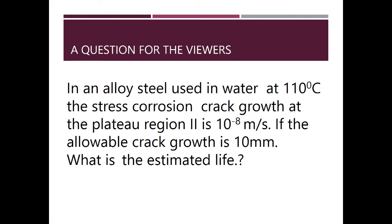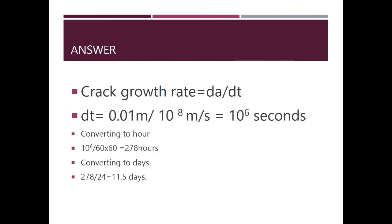A question for the viewers: In an alloy steel used in water at 110 degrees centigrade, the stress corrosion crack growth at the plateau region 2 is 10⁻⁸ meters per second. If the alloy crack size is 0.01 meters, then dA/dT gives: time = 0.01 m ÷ 10⁻⁸ m/s = 10⁶ seconds. Converting to hours: 10⁶ ÷ 3600 = 278 hours. Converting to days: 278 ÷ 24 = 11.5 days. It takes 11.5 days for the stress corrosion cracking to propagate to rupture.